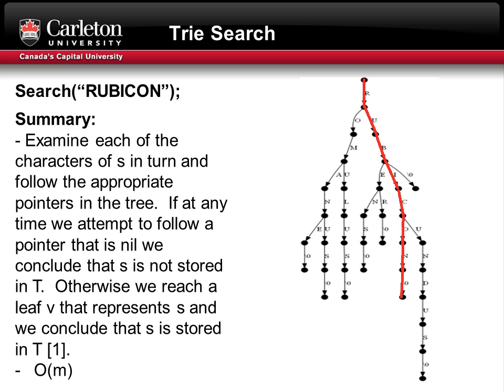The last operation of the trie data structure I'm going to discuss is search. You examine each character of S in turn and follow the appropriate pointers in the trie. If at any time we attempt to follow a pointer that is nil, we conclude that S is not stored in T. Otherwise, we reach a leaf V that represents S, and we conclude that S is stored in T. In this example, we search for the word rubicon: r-u-b-i-c-o-n. There's a null terminator coming from n, so rubicon is a word in the trie. This operation has a running time of O(M), where M is the size of the word being searched for. It is important to note that the string is an array of byte characters, where each character can be accessed in constant time.